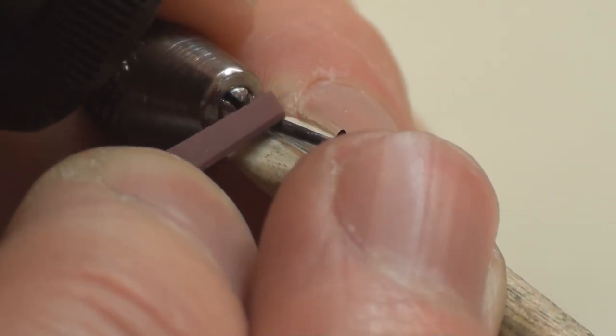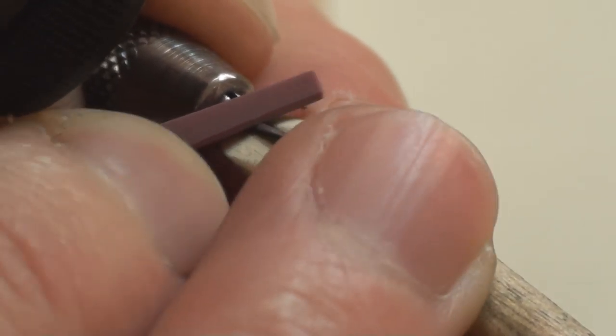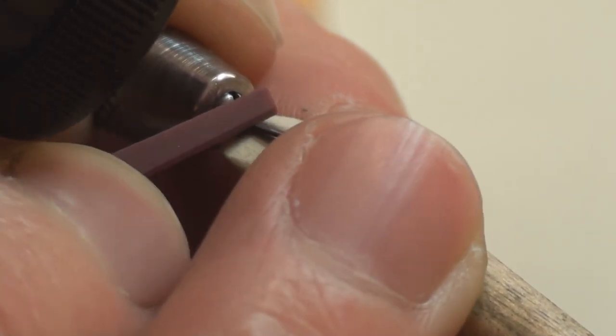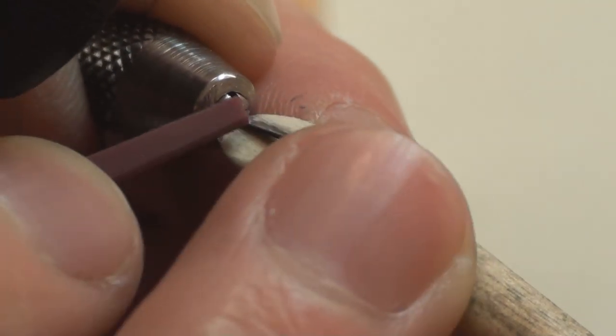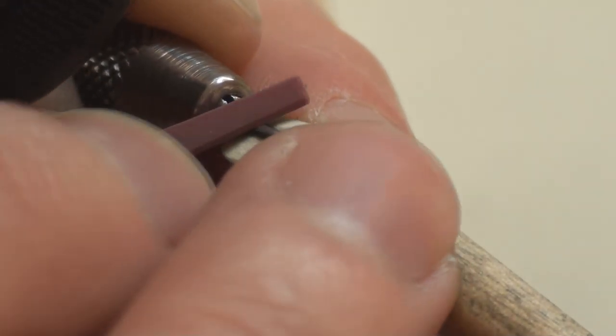So now what I've done is, I'm just sharpening up where the boss meets the tapered section to the main body of the hand, and if you just notice, all the time I'm rocking the hand towards me.